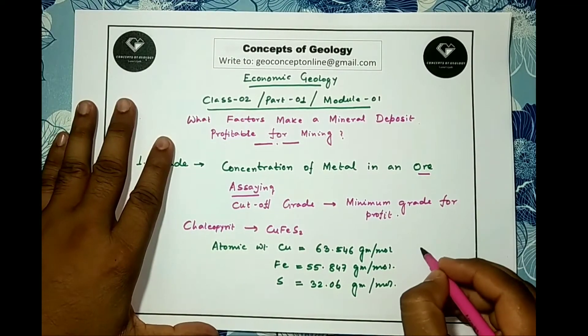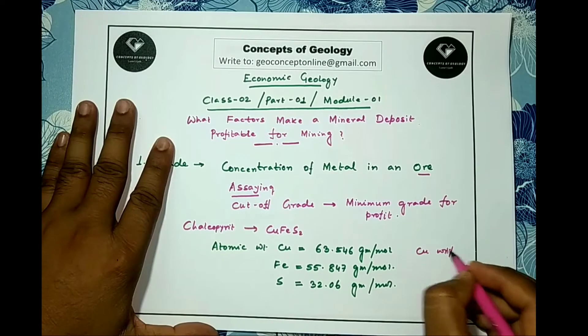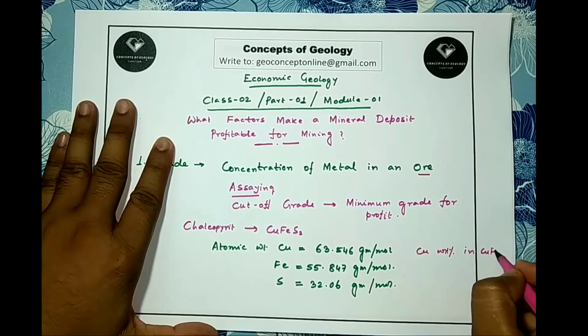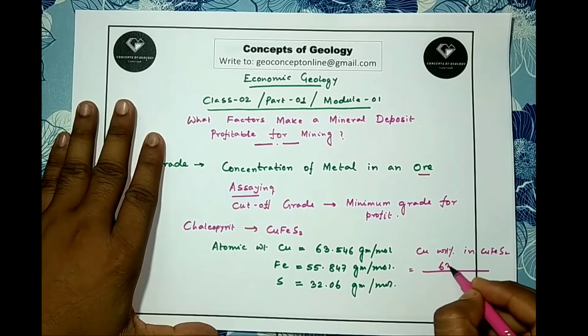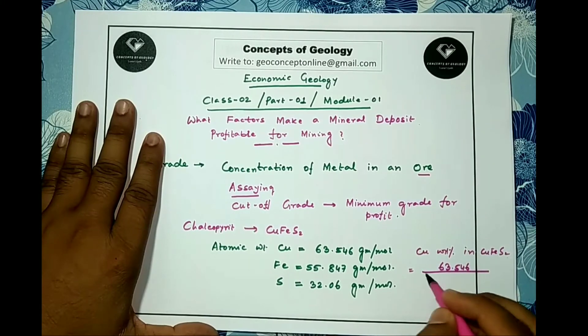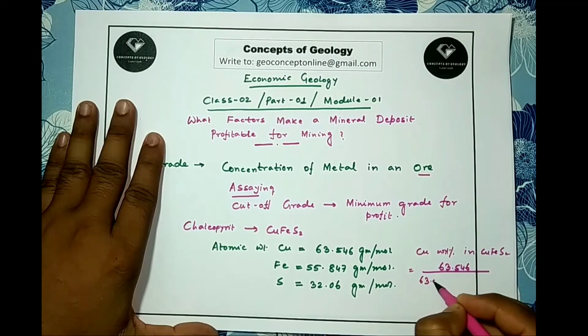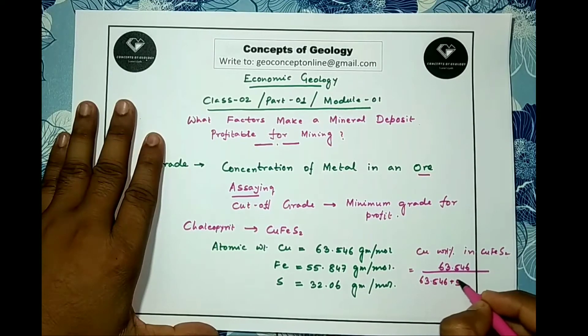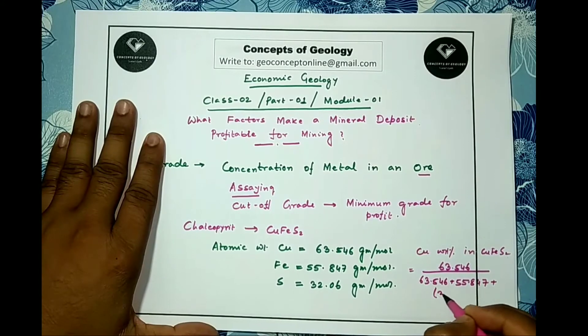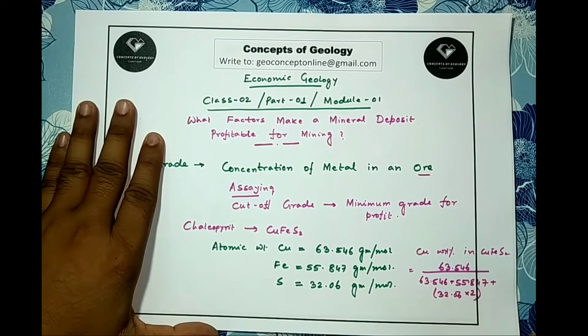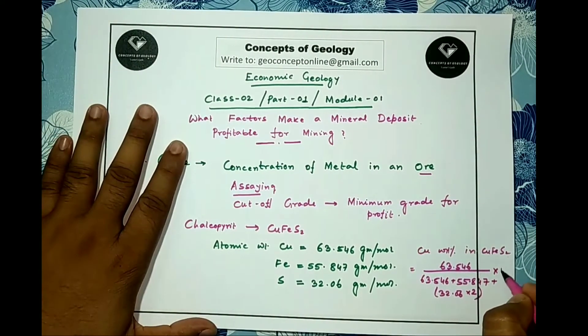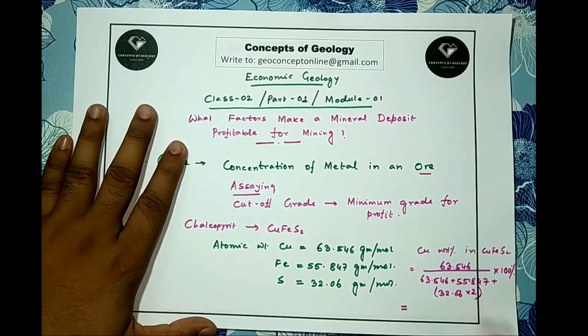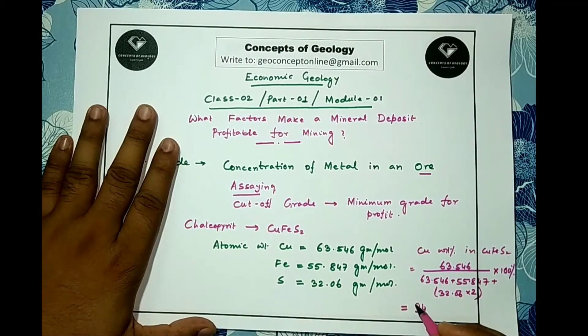If I calculate the weight percentage of copper in CuFeS2, this will be 63.546 divided by the summation of atomic weights: 63.546 plus 55.847 plus 32.06 multiplied by 2, because we have two atoms of sulfur in chalcopyrite, multiplied by 100. If I complete the calculation, we will have 34.63 percent.